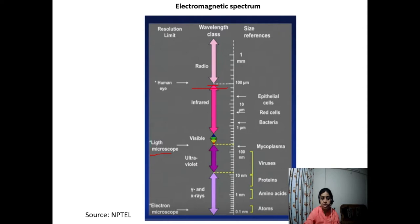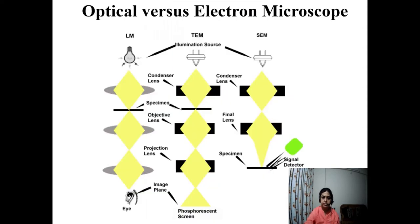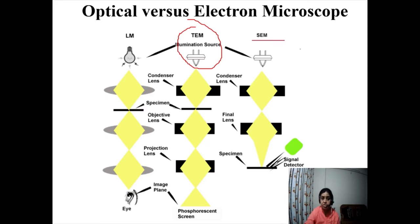Here is a comparison between optical and electron microscopes. The optical microscope and the transmission electron microscope are very similar optically. Both have a condenser lens, an objective lens, and a projection lens. However, the scanning electron microscope has a different optical system, which we will discuss later.